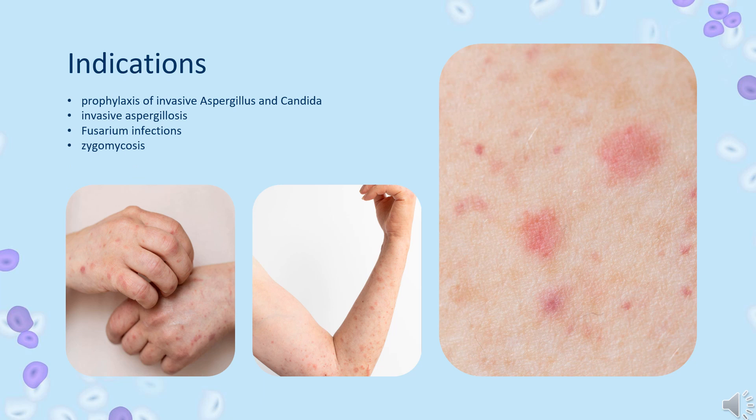Posaconazole is used for prophylaxis of invasive Aspergillus and Candida infections in patients 13 years of age and older who are at high risk of developing these infections due to being severely immunocompromised — for example, as a result of hematopoietic stem cell transplant (HSCT) with graft-versus-host disease (GVHD), or due to hematologic malignancies with prolonged neutropenia from chemotherapy.